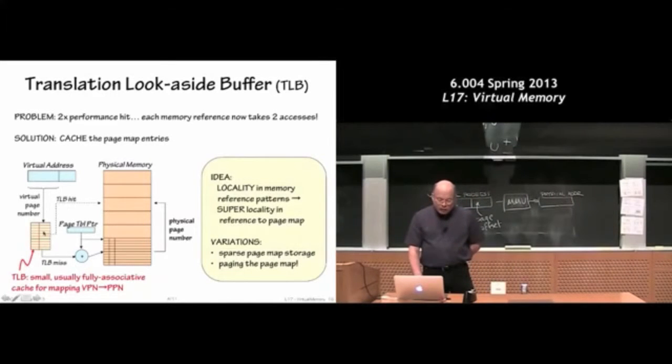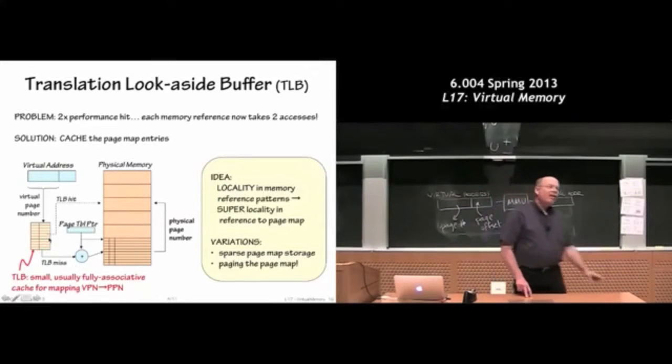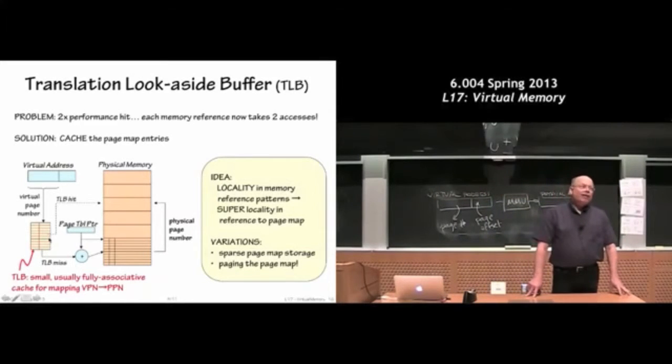So almost all machines implement a TLB. And so that means we only have to go through this sort of more cumbersome access to the real page map only when we miss in the TLB. And that happens for some incredibly small percentage of time.